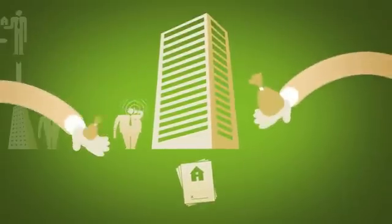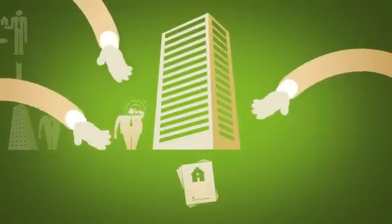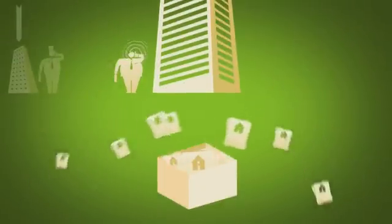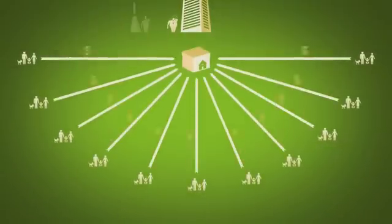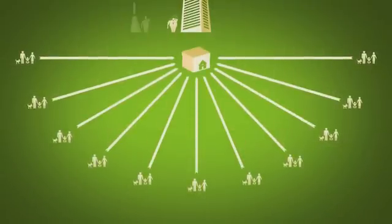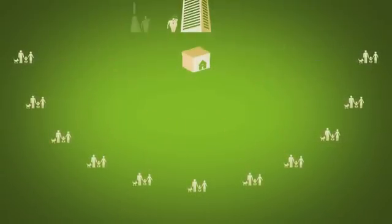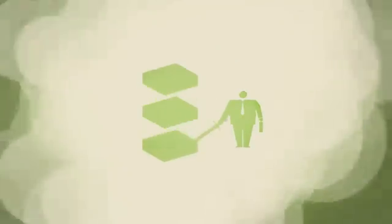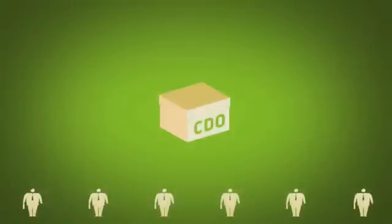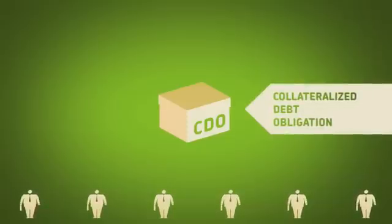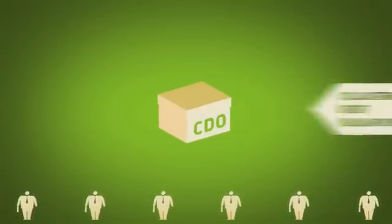The investment banker then borrows millions of dollars and buys thousands more mortgages and puts them into a nice little box. This means that every month, he gets the payments from the homeowners of all the mortgages in the box. Then he sics his banker wizards on it to work their financial magic, which is basically cutting it into three slices: Safe, okay, and risky. They pack the slices back up in the box and call it a Collateralized Debt Obligation, or CDO.